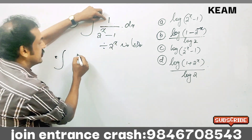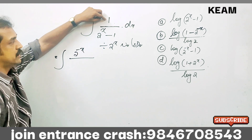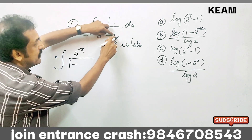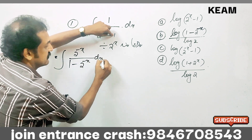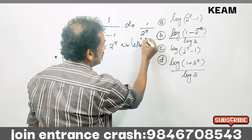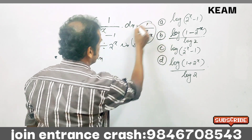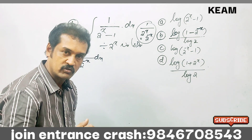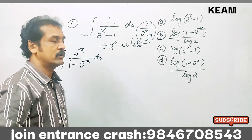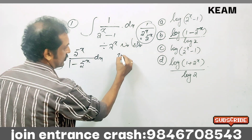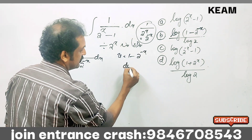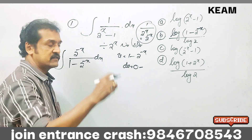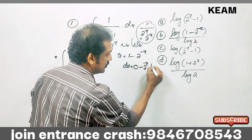The numerator is 1 divided by 2^x, and the denominator 1/(2^x) becomes 2^(-x). So the expression becomes 2^(-x) divided by (1 minus 2^(-x)) dx. Now we will use substitution: let u equal to 1 minus 2^(-x). Then du equals 0 minus the derivative of 2^(-x), which is 2^(-x) times log 2.